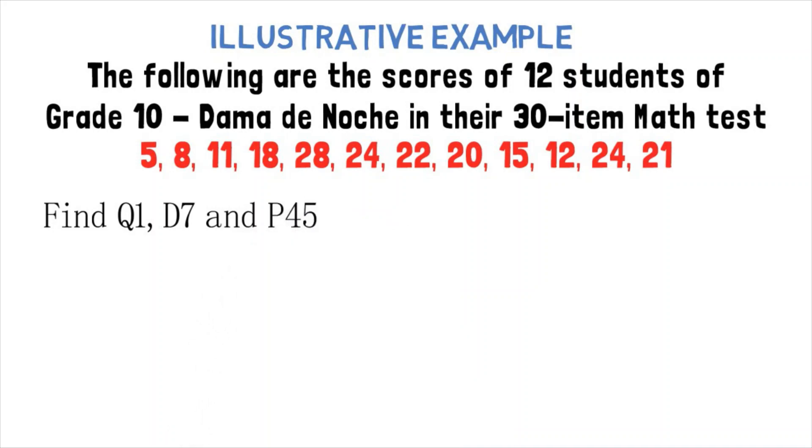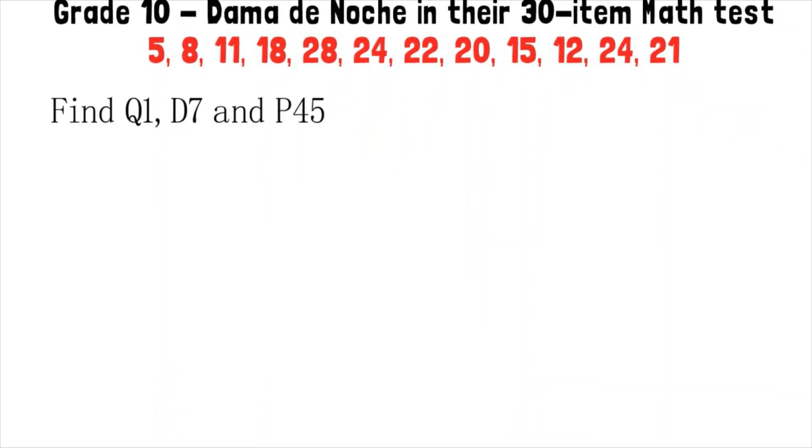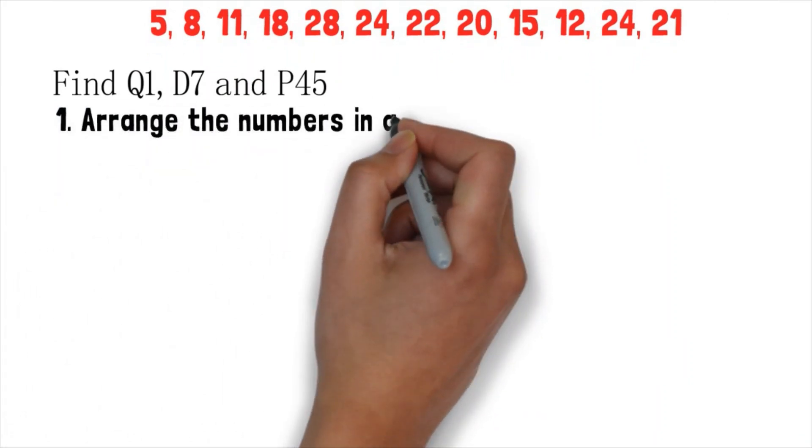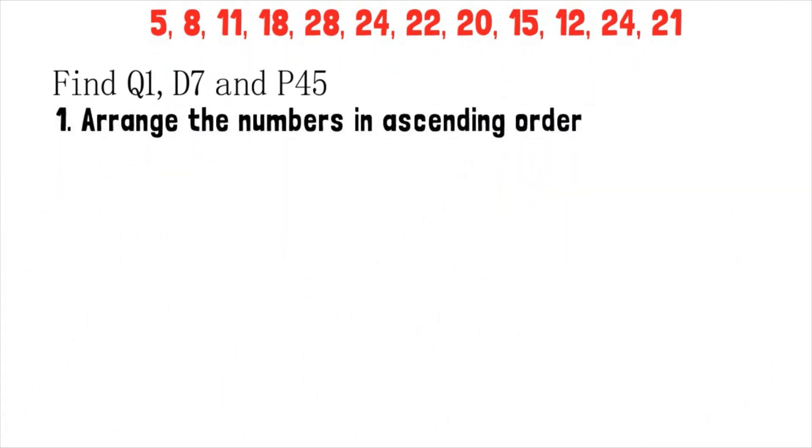Let us try to solve for Q1 first. Our first step is to arrange the data into ascending order. That means we'll write it from the lowest score up to the highest score. After arranging in ascending order, we'll locate the position of the score in the distribution using our formula for Q1.